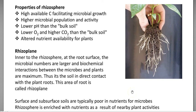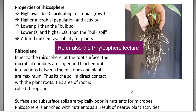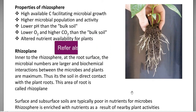Now we look at the properties of the rhizosphere. The first point is high available carbon facilitating the microbial growth in this region. Higher microbial population and enzyme activity will be high in the rhizosphere. When comparing the pH of the rhizosphere region, it will always be lower than that of the bulk soil.